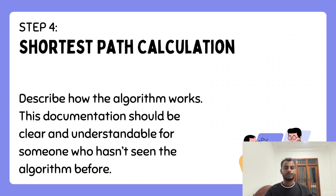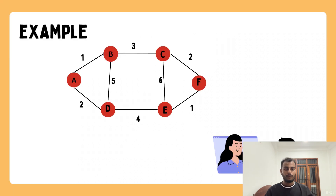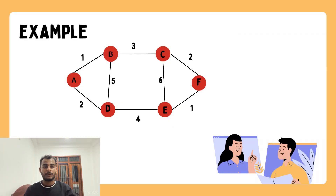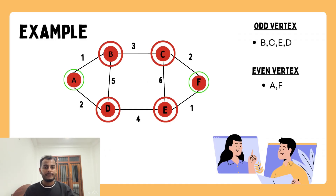Now let's do an example. I have given a graph — let's solve it step by step. Step one is to identify odd-degree vertices, because an Eulerian circuit exists only when all vertices have even degrees. Looking at the graph: A is even, B is odd, C is odd, D is odd, and E is odd, while F is even. Since we have odd-degree vertices, we must add duplicate edges between them to make all vertex degrees even.